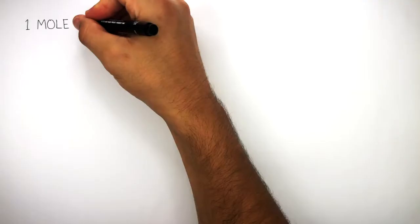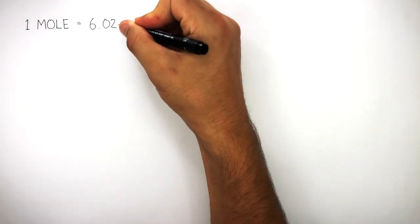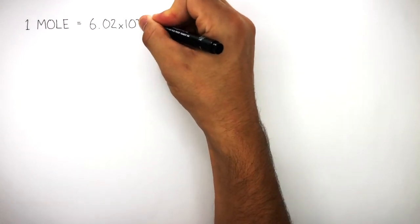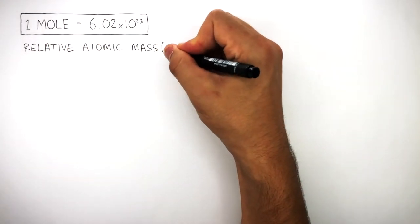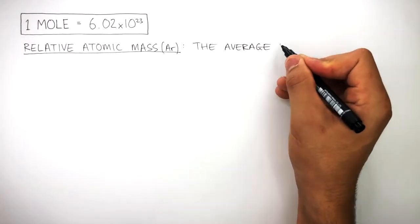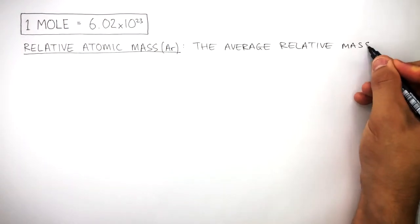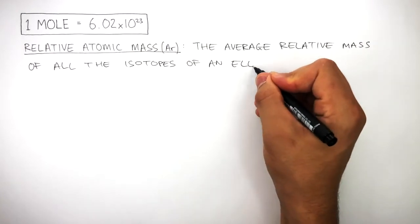One mole is equal to 6.02 times 10 to the power of 23. And relative atomic mass, or AR, is the average relative mass of all the isotopes of an element.